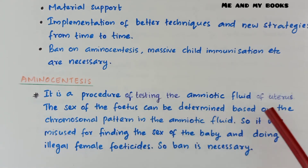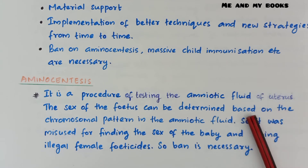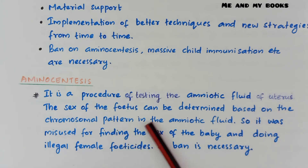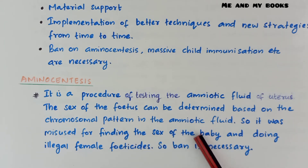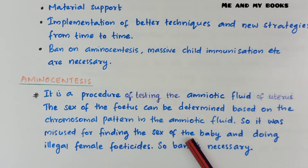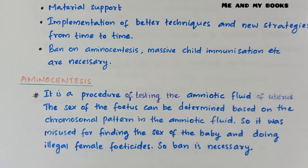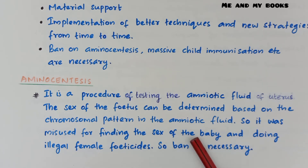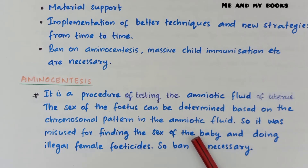Amniocentesis is a procedure of testing the amniotic fluid found inside the uterus. The sex of the fetus can be determined based on the chromosomal pattern in the amniotic fluid. However, it was misused for finding the sex of the baby and carrying out illegal female feticides. Therefore, amniocentesis is now banned.